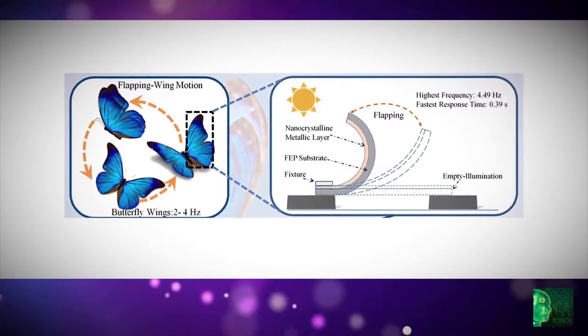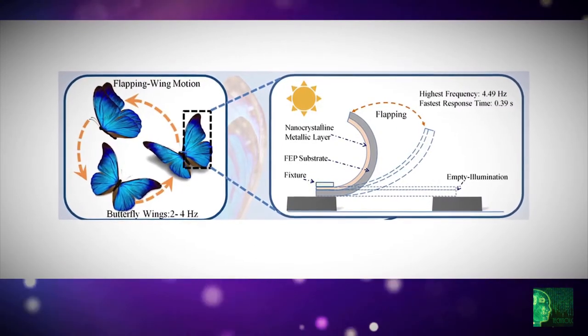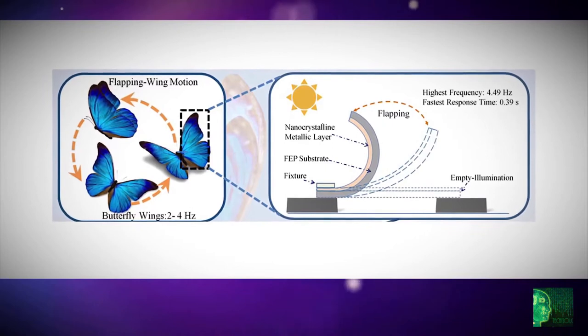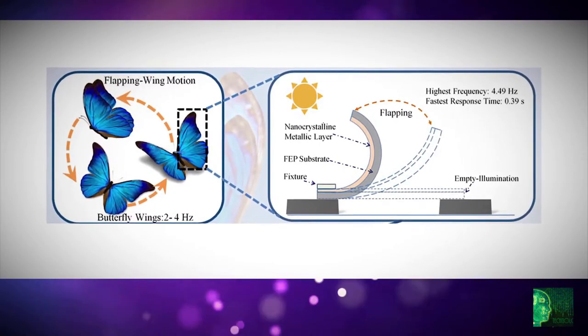Ningyi Yuan, Jianning Ding, and colleagues wanted to develop artificial wings that convert natural sunlight into a flapping motion without the need for additional hardware.